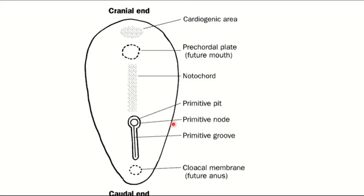In summary of the trilaminar germ disc: the primitive streak contains a groove known as the primitive groove. The primitive node has a depression called the primitive pit. The notochord is situated between the epiblast and hypoblast. The adhesion of epiblast with hypoblast forms the prochordal plate — representing the future oral cavity — and in front of it is the cardiogenic area. Caudal to the primitive streak is the cloacal membrane.